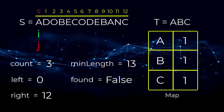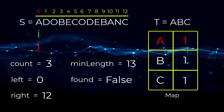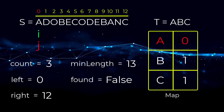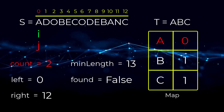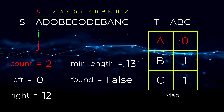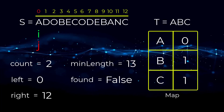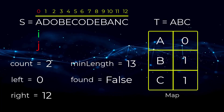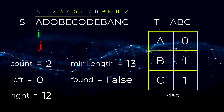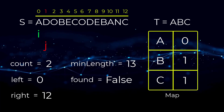Our J pointer is currently looking at character A. We check if A is in our map — it is — so we decrease the value of A down to zero. Since A is at zero, we decrease our count variable to two. This means we have satisfied the number of A's needed and now need to find one B and one C. We continue moving J forward while count is greater than zero.